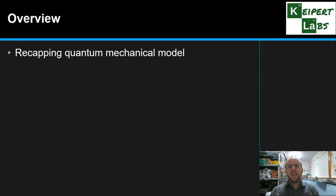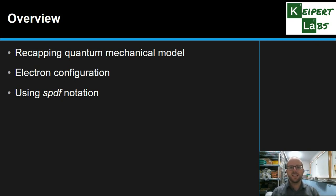We're going to start by recapping the quantum mechanical model of the atom that we've just recently introduced. We're going to remind ourselves about what we mean by electron configuration, and then we're going to introduce what we call the SPDF notation, this way of writing out an electron configuration in light of what we now know.